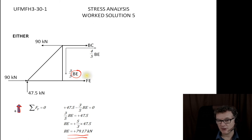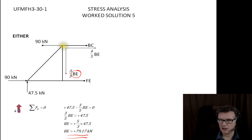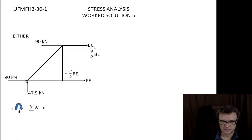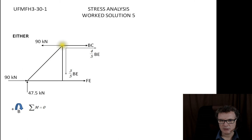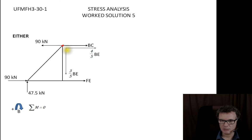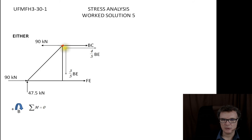The next thing to do is take moments. In the course notes they proceed to resolve forces in X first — let's see. They do take moments as I suggested. Taking moments about the hinge (top-left joint) is a good choice because it eliminates the BC and BE forces at that joint, so those forces don't appear in the moments equation. We'll go round clockwise.